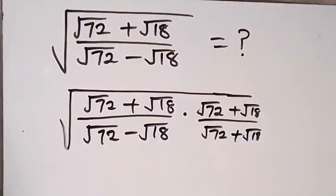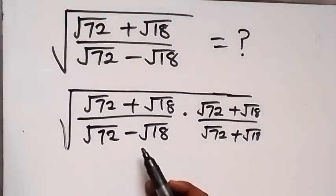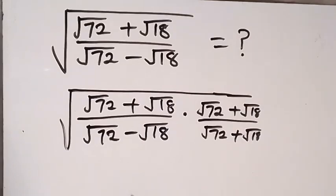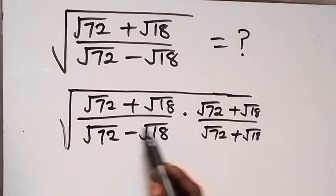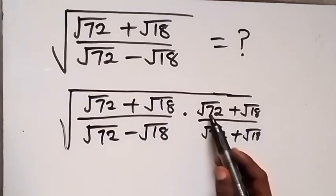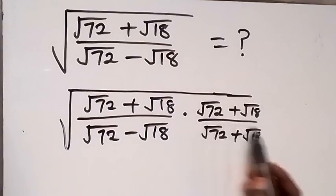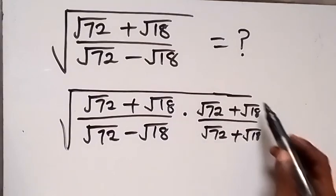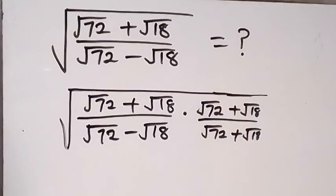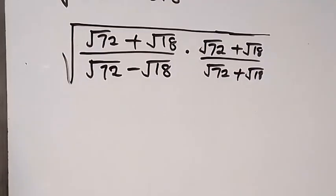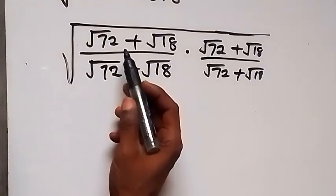What we have simply done here is rationalize the expression inside the root by multiplying with the conjugate of the denominator. The conjugate of (root 72 minus root 18) is (root 72 plus root 18), and we divide by it as well. This method is called rationalizing the denominator.